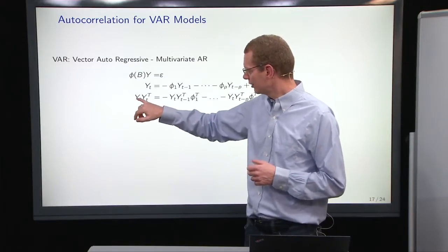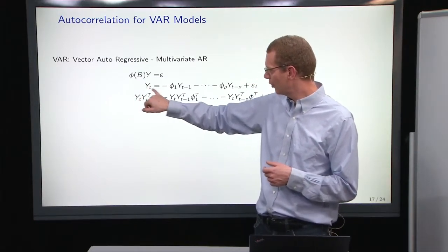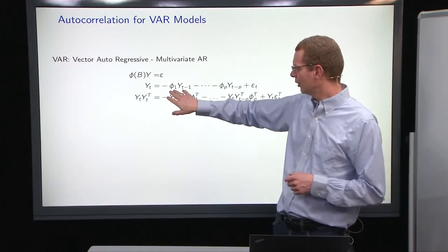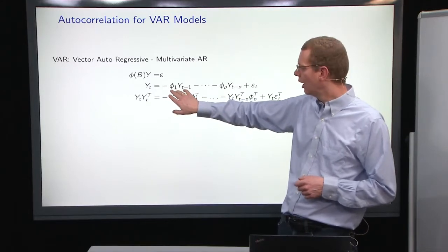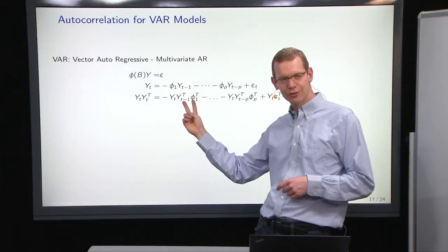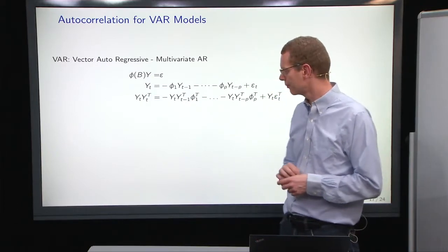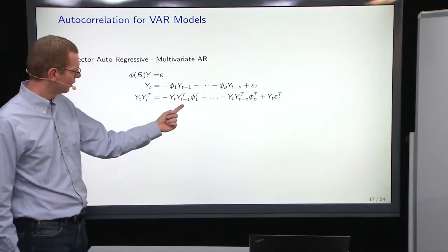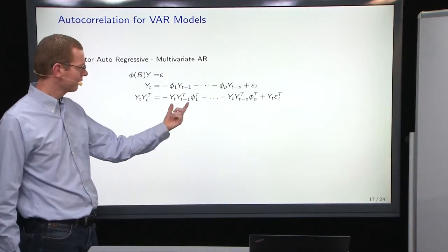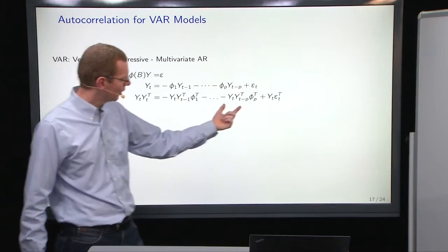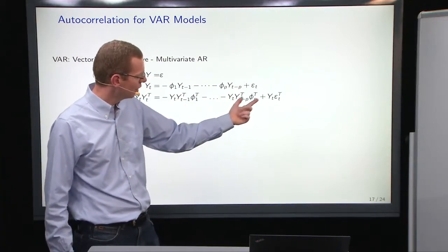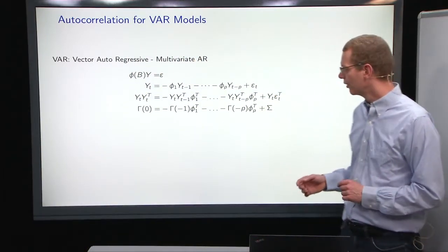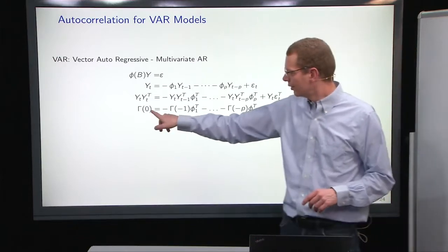Now, what I've done is, I take y_t, I pre-multiply that on the transpose of the process definition up here. So, remembering that when I transpose a product, I take the elements, swap the order, and transpose each of the elements. Now, when I look at this, this is the variance of gamma zero, this is gamma, let's take an expectation, I get gamma of minus one down to gamma of minus p with some coefficients on, and then I get the noise out here.